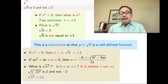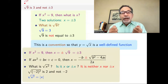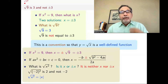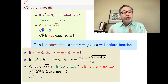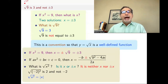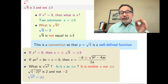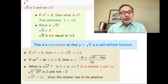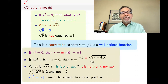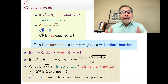Absolute value of x means you plug in x and what you get is the positive version. Absolute value of minus 2 is 2. Absolute value of 2 is 2. So square root of x squared is absolute value of x — not x squared. The reason for that is that the answer has to be positive, and by putting the absolute value, we know that it's positive.